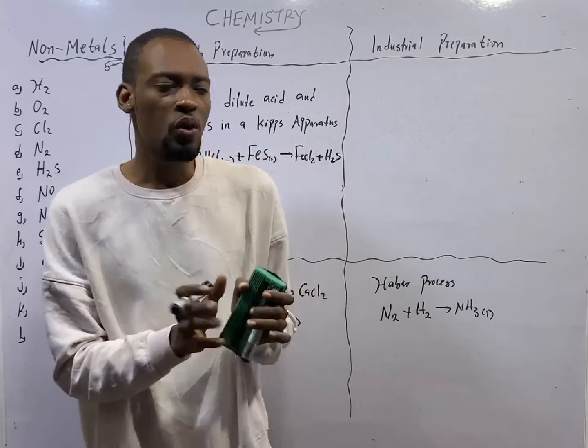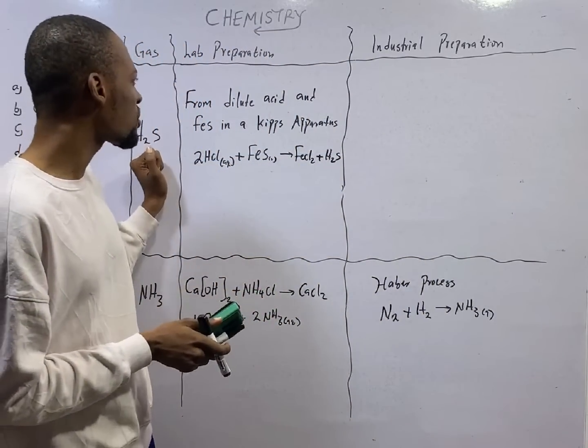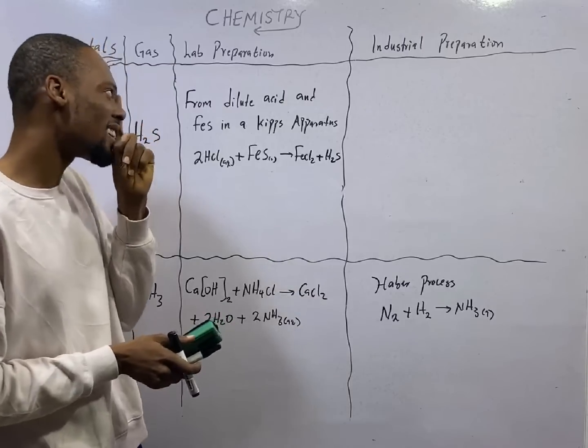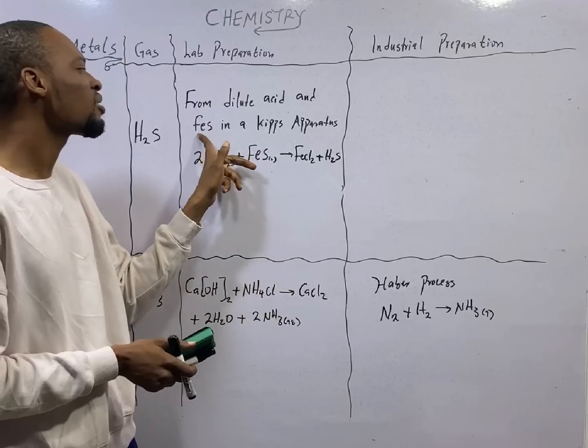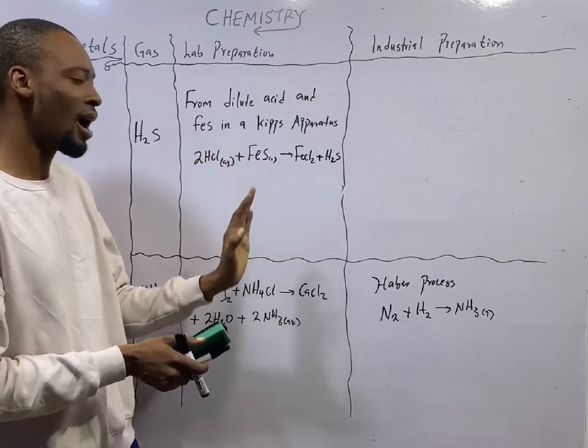What JAMB wants you to know when it comes to hydrogen sulfide gas is that it is prepared from dilute acid and iron sulfide in a Kipp's apparatus.